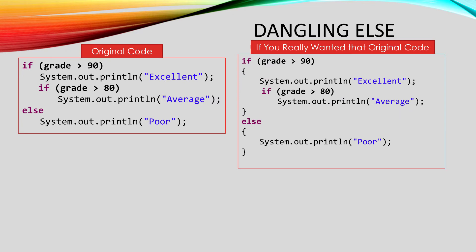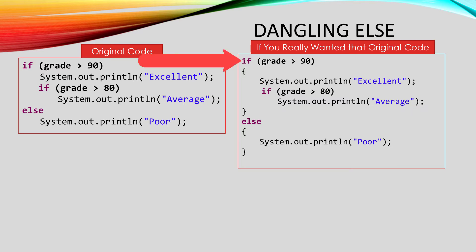If you really want the else to be paired with the first if, you can force that to happen by adding the curly brackets. When you do that, when the compiler gets the else statement, that inner if is already finished and can't accept the else. So the else gets paired with the first if.